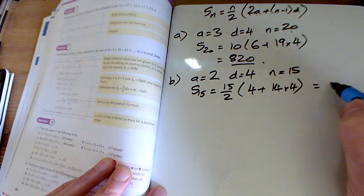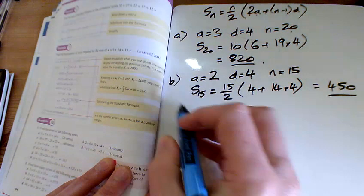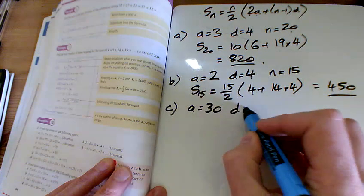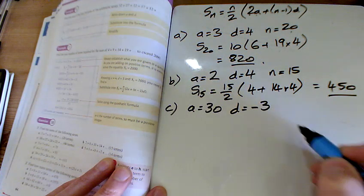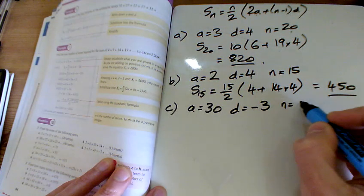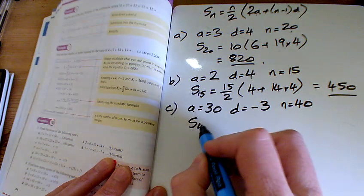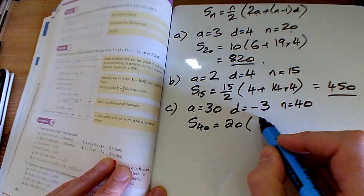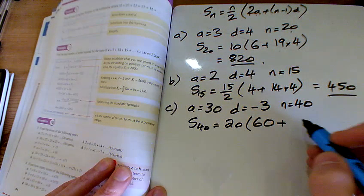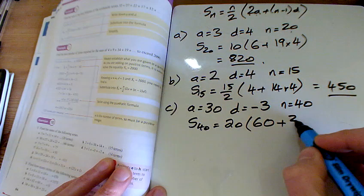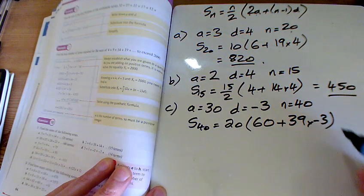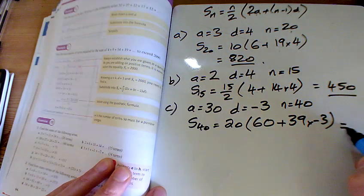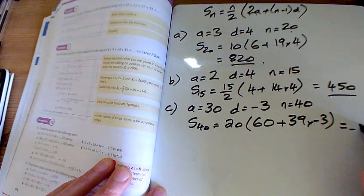For part c, we've got a first term of 30. It's going down each time. So we've got a negative difference, minus 3. And we've got 40 terms here. And so if I'm working out 40 of those, 40 divided by 2 is 20. 2a's, 2 times 30 is 60, plus 39 times by minus 3 here. So that bit there works out to be minus 57. Minus 57 times 20 is minus 1140.